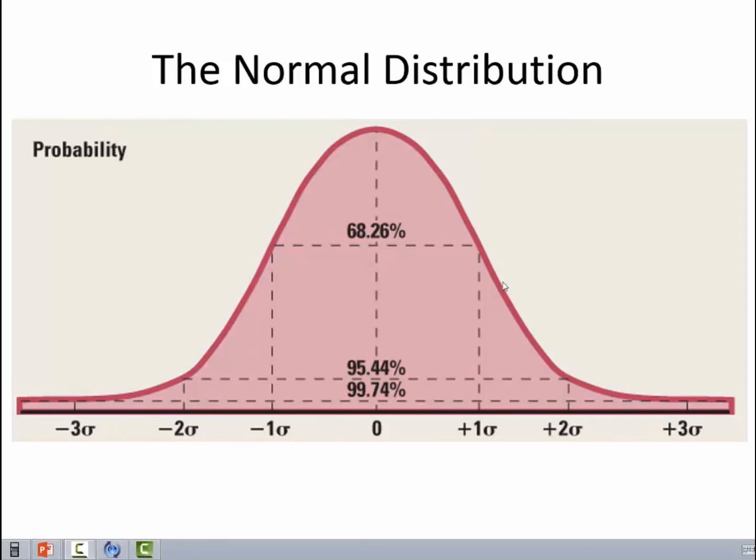By the way, how did I get 31.74%? It's 100% minus 68.26%, gives me 31.74%.